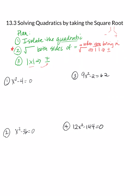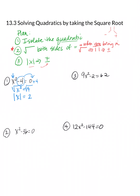Number one: x squared minus 4 equals 0. You can probably recognize this as a difference of squares, but let's take it step by step. The plan says isolate the quadratic, so I add 4 to get x squared equals 4. Take the square root of both sides — I take 1x out, but it's an even index, so absolute value bars are required. Square root of 4 is 2. Then drop the absolute value bars using plus or minus, so x equals plus or minus 2.